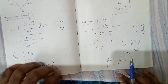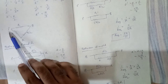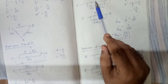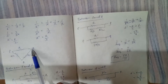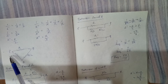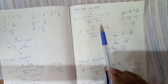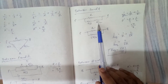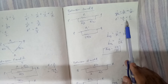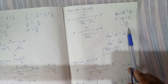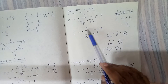Now calculating between P and Q: directly P to Q there is R. Here P to R and R to Q will be in series, giving R by three plus R by two, which equals five R by six.